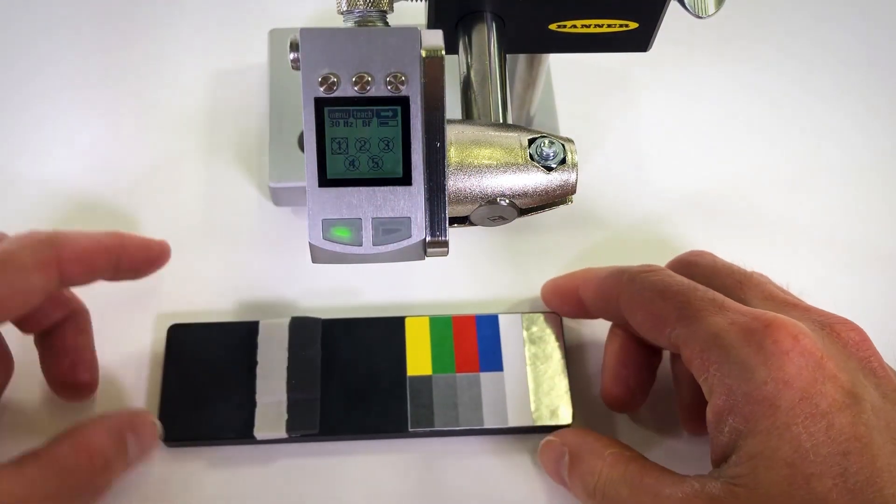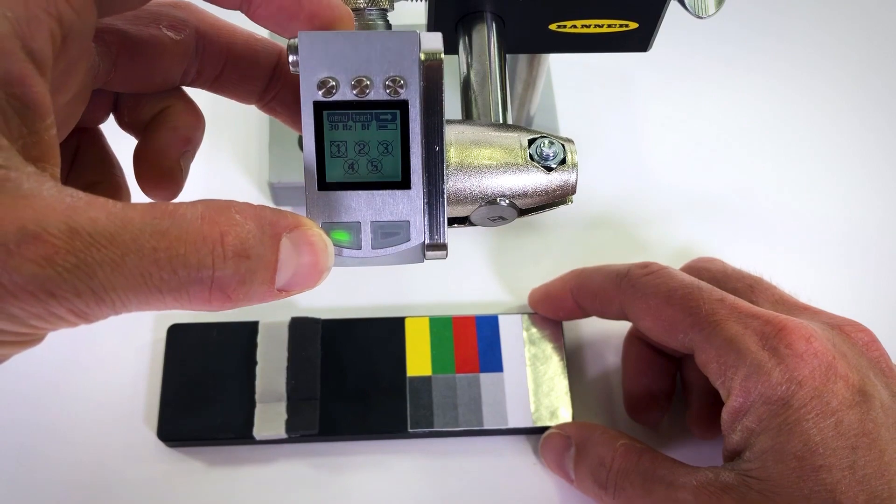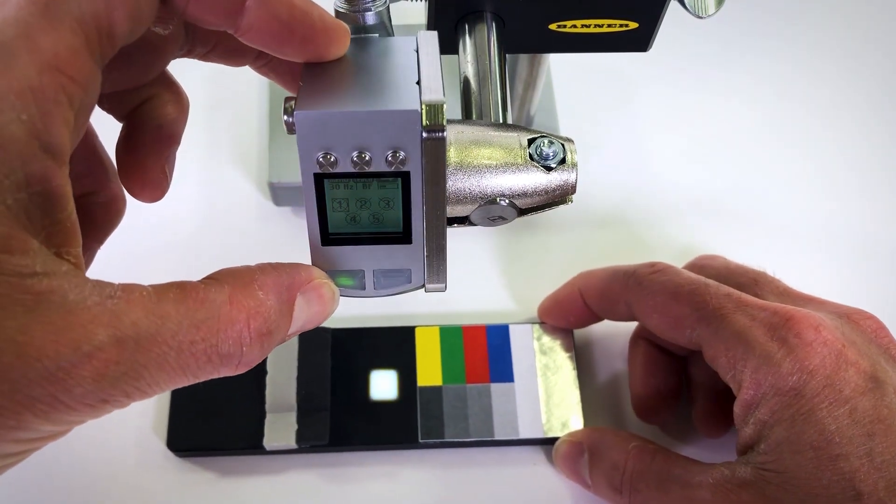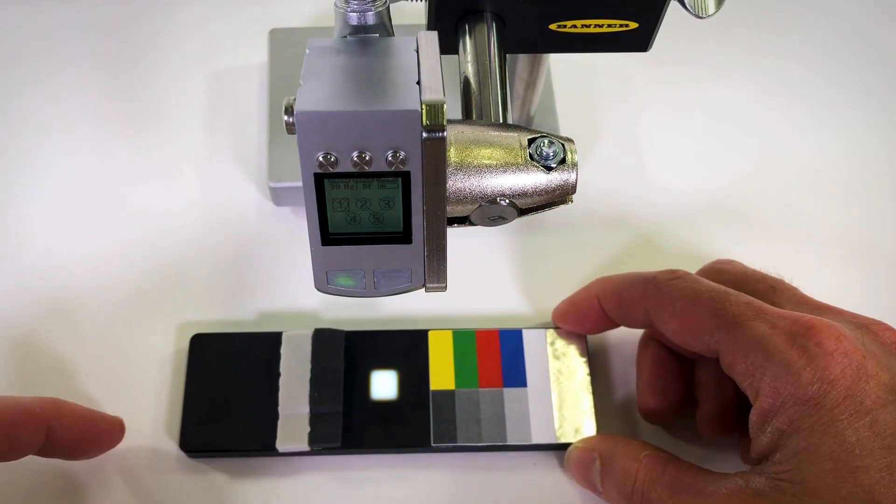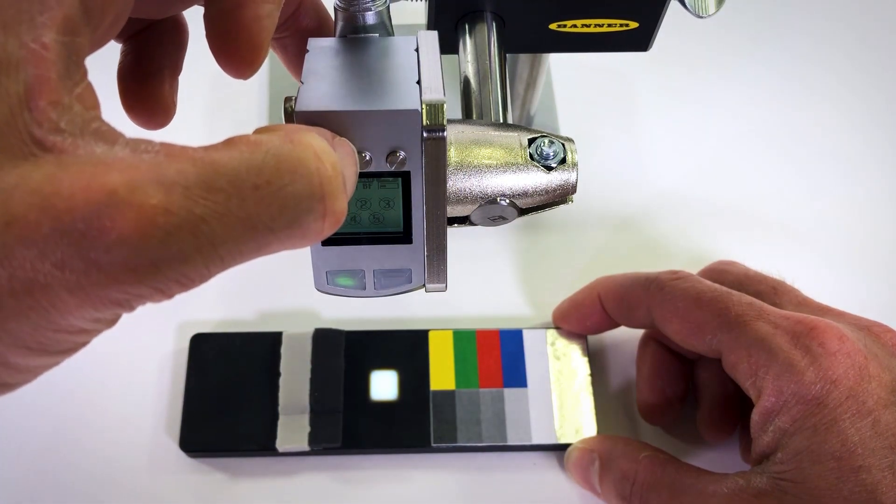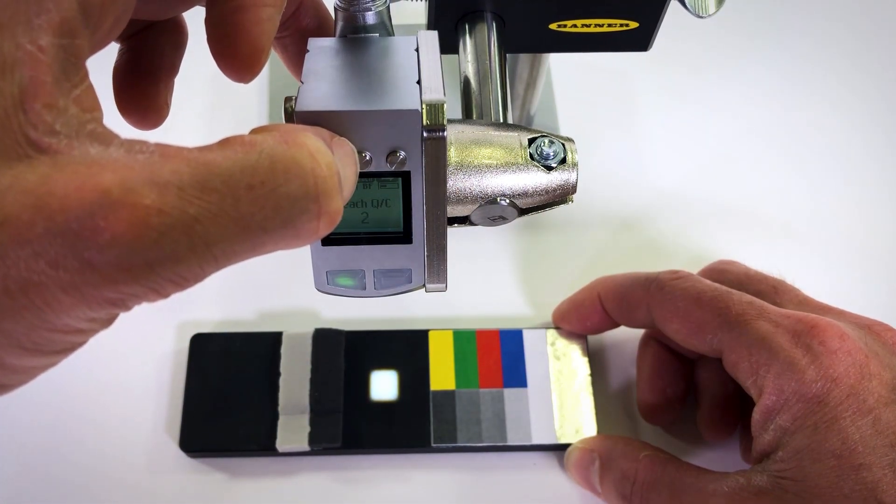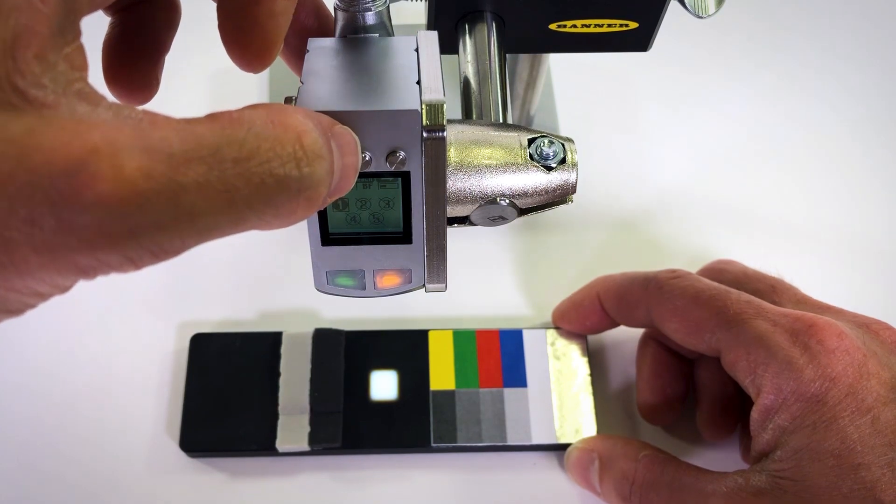I will be teaching three colors of targets as well as a background with no target present in best fit mode. With the first target in front of the sensor, I press and hold the teach button for three seconds. Successful teaching of this target is indicated by both the green and orange LEDs flashing.